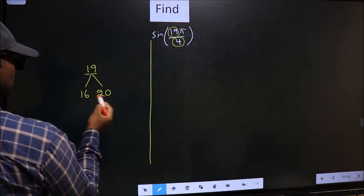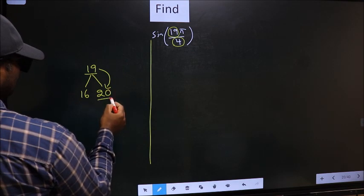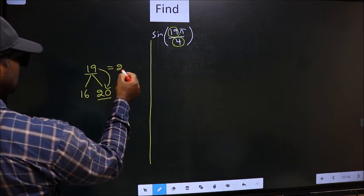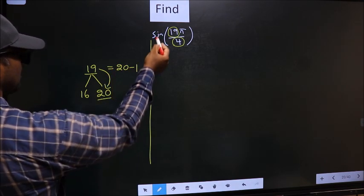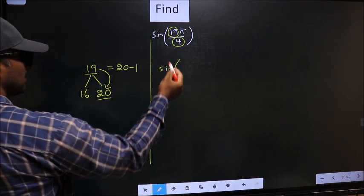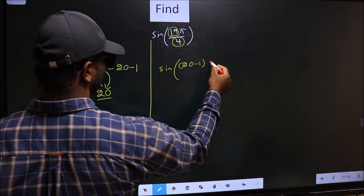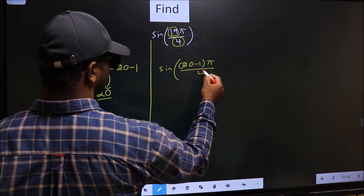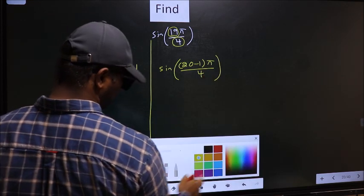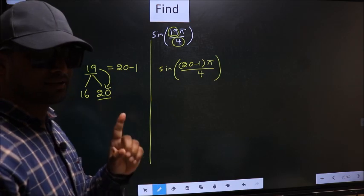Now 19 is close to which multiple? This is close to 20. So 19 should be written as 20 minus 1. So this will change to sin, in place of 19 now you should write 20 minus 1, π by 4. This is your step 1.